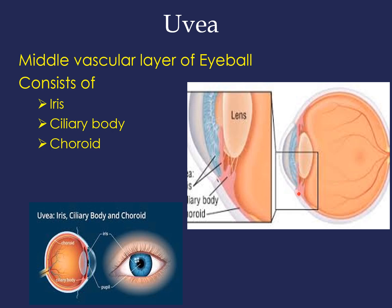The uvea or uveal tract is the middle pigmented vascular layer of the eyeball. The eyeball has three layers: the external layer consists of cornea anteriorly and sclera posteriorly. The middle vascular layer consists of three parts: iris, ciliary body, and choroid. This is the uveal tract — not a single structure, but three continuous yet distinct structures.